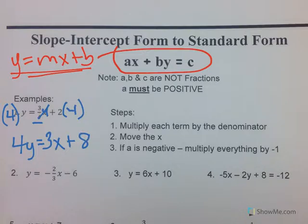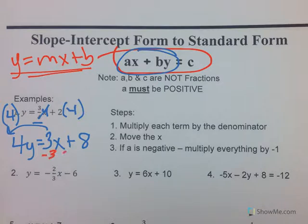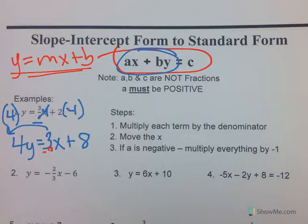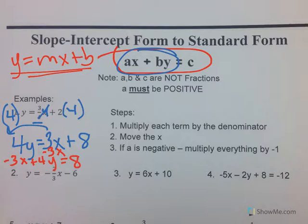Now you want to move the x over to the other side, because x and y are together on that side in standard form. When you move it over, you're going to subtract by three x. So you put negative three x over here, plus four y equals eight. You want the whole number without the variable by itself, and x and y are together on the left.